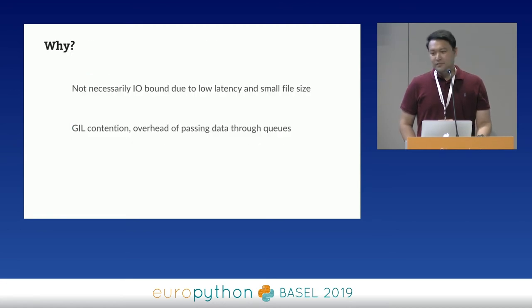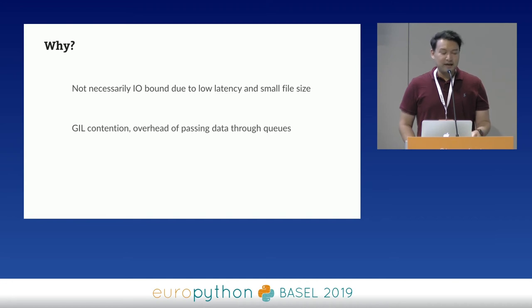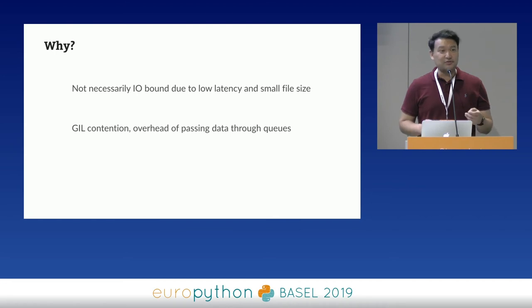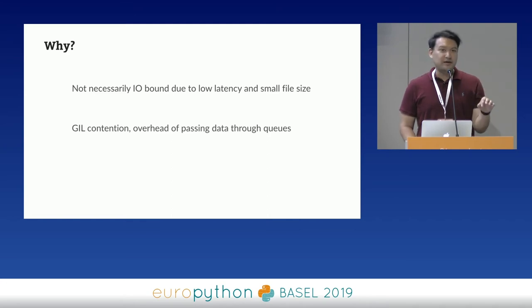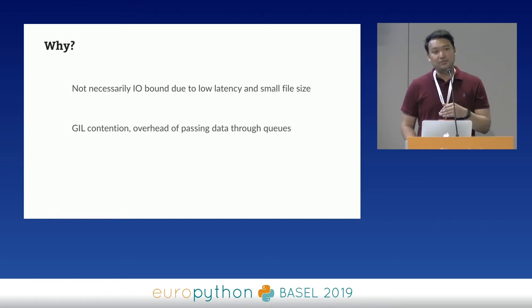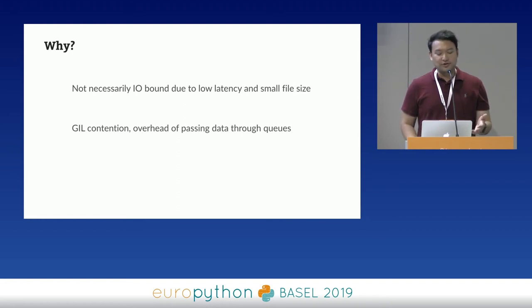Why is this happening? We're not necessarily I/O bound here. Threading is really good when you have a lot of I/O bound work, but due to the low latency of the network — single-digit millisecond latency — and the small file size, there's not a whole lot of I/O. Writing a 100-byte file is very different from writing a 2 or 3-megabyte file. GIL contention and the overhead of passing data through the work queue and result queue — with all their locks and condition variables — actually ends up making things slightly slower.